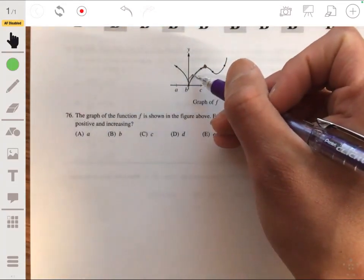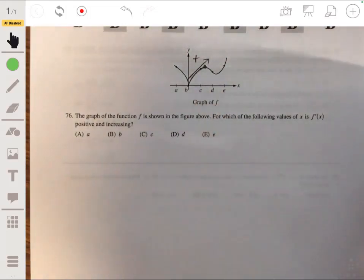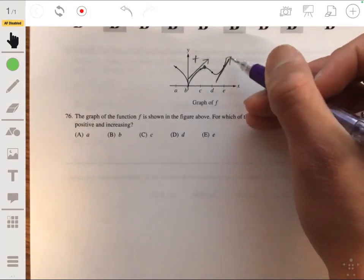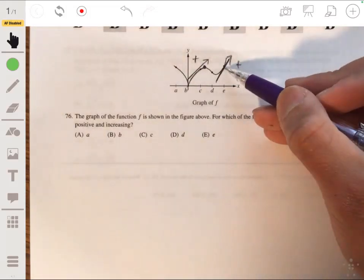And so, like again, if we were to draw a tangent line, its slope will be positive and it's also positive at this point at the end over at e.